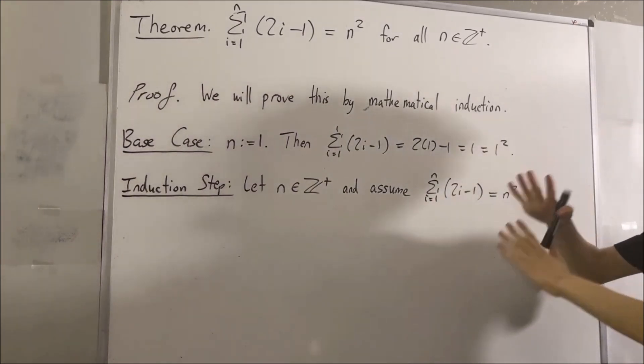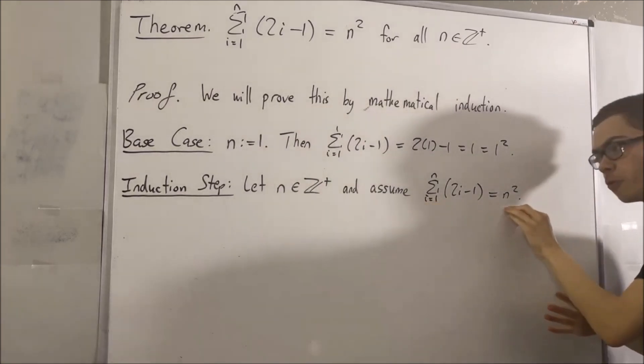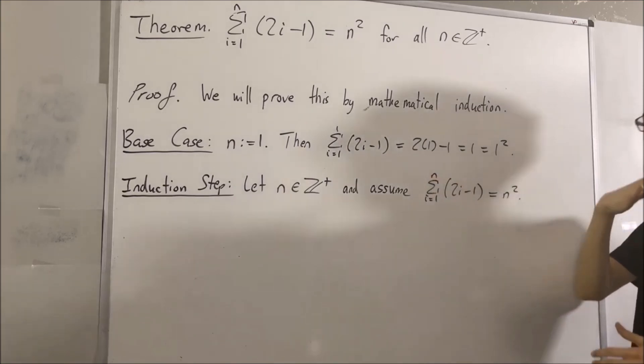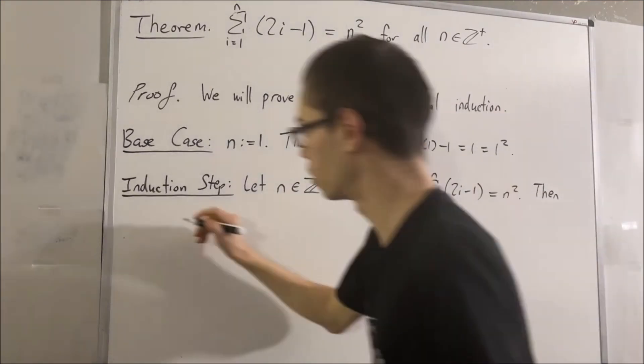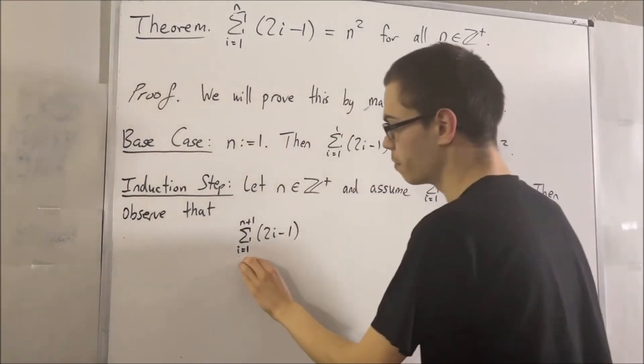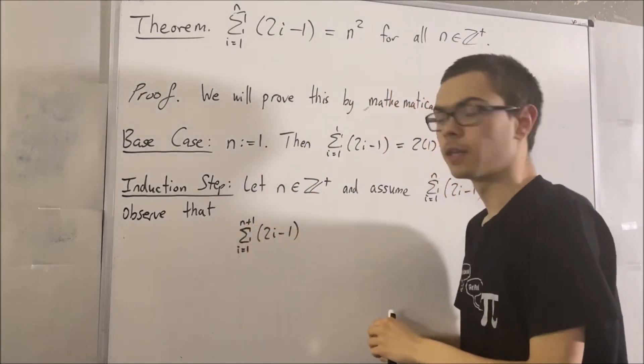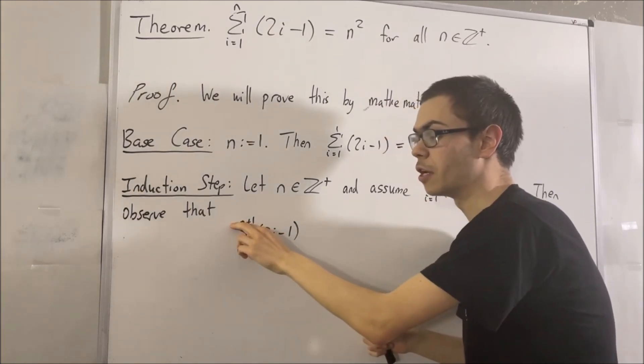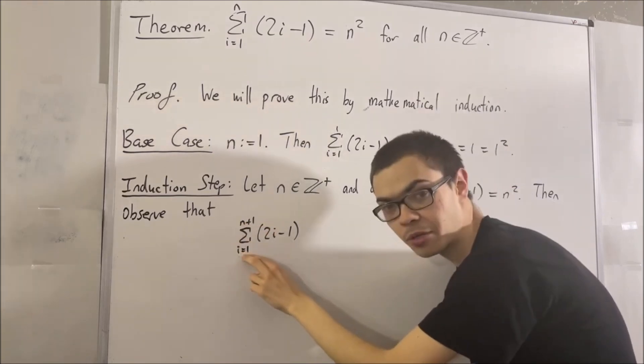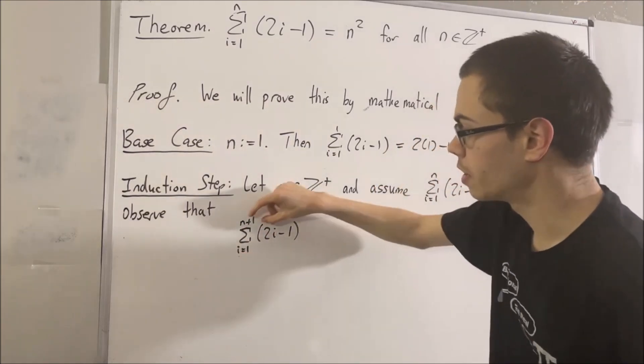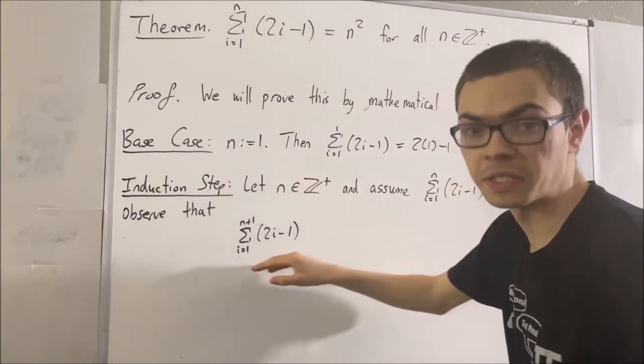So now let's prove that the same statement is true for n plus 1. And to see that, check this out. If we take the sum up to n plus 1, then if we recall, when the upper bound of the sum is strictly bigger than the lower bound of the sum, then we can pull out the n plus 1 term from the sum.